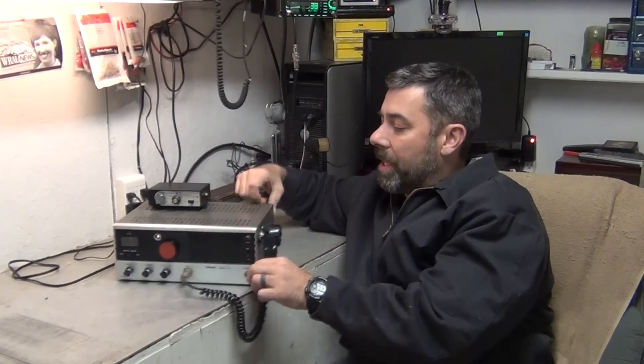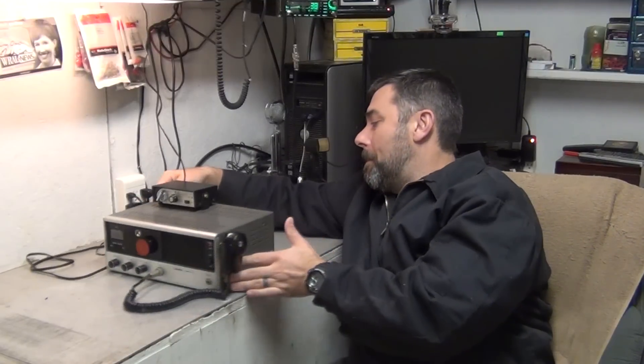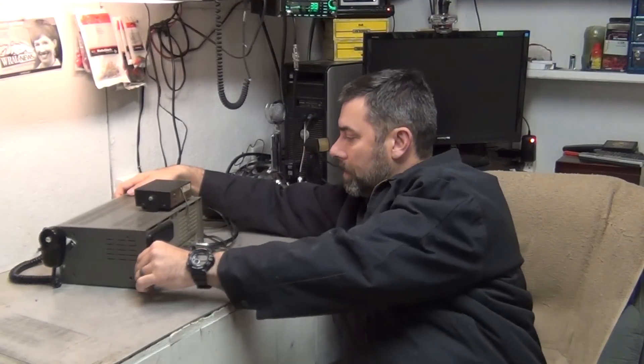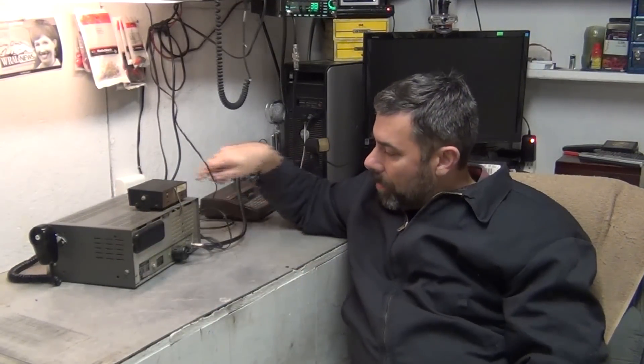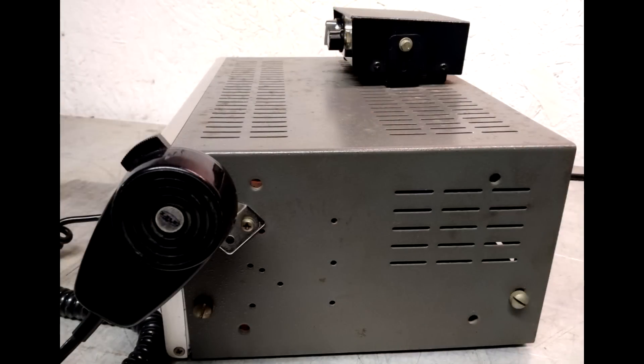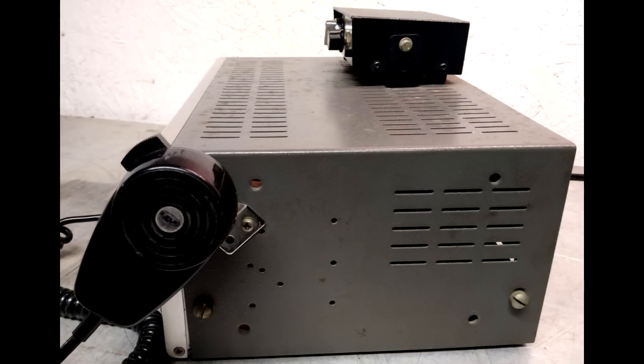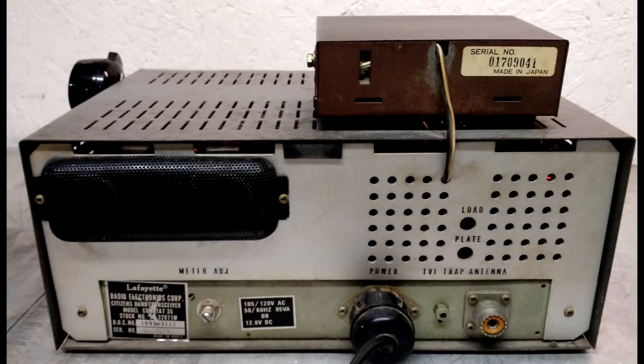Now, let me go ahead and turn this thing around and we'll see the back of it. Now, what's really cool about this, wait a minute, I don't want to damage my little connector here. Lafayette radio band, citizen band receiver, ComSat 35. What's cool about this, if I can get it plugged in here, is that there is a load and plate adjustment on the back of this.